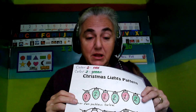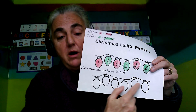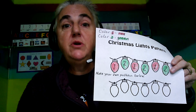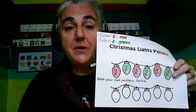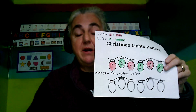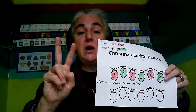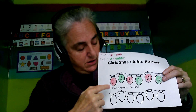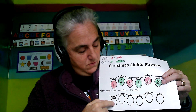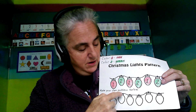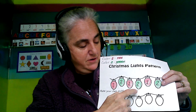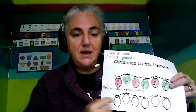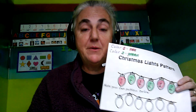Down below there's a row of empty bulbs where you get to choose your own pattern. Why don't you choose two colors of crayons you'd like to use and see if you can color: one color, the other color, the first color, the second color, the first color, the second color — and make your own pattern.